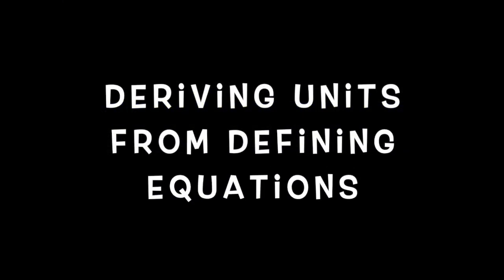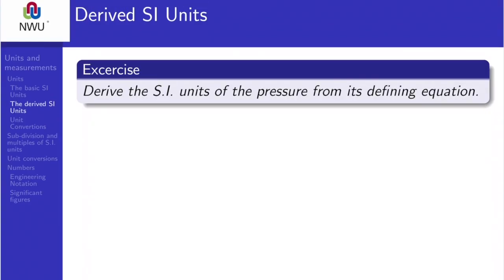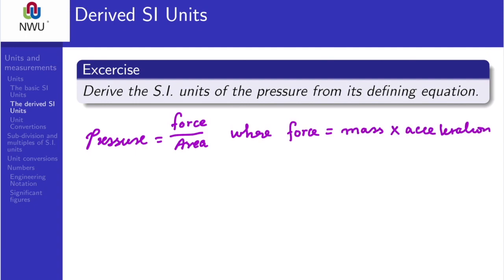Now let us derive a unit of pressure from the basic SI units. We know that pressure is given as force over area and we can further break down force into its defining equation as force being equal to the mass multiplied by the acceleration.